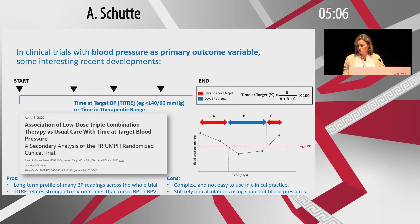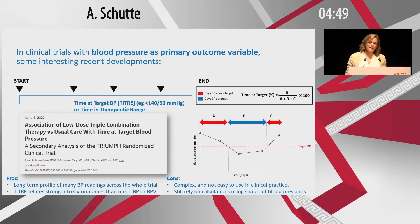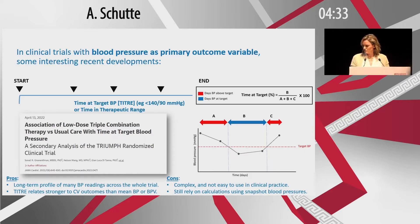Time at target is quite strong in predicting outcomes — stronger than mean blood pressure or blood pressure variability in predicting cardiovascular events. The long-term profile of many blood pressure readings is not lost but incorporated in this measure. The challenge is that it's a complex research-type analysis, not currently used in clinical practice, and it still relies on snapshot blood pressures taken at specific occasions — in this case, at five time points.